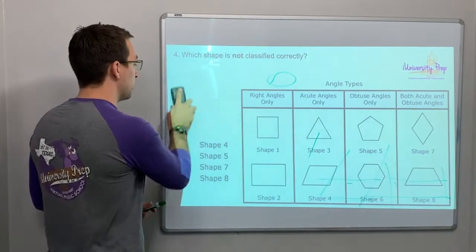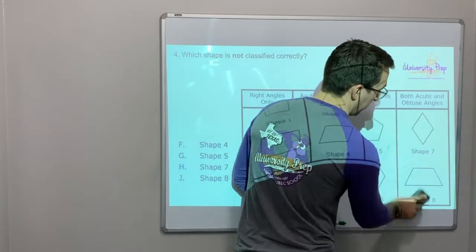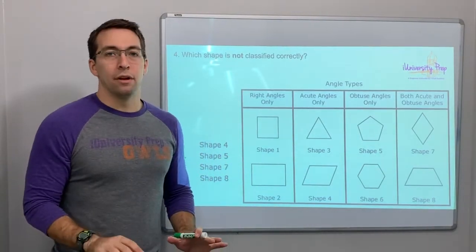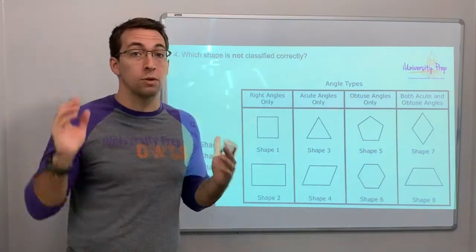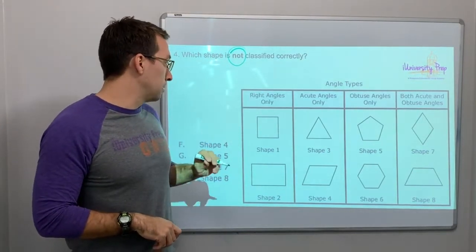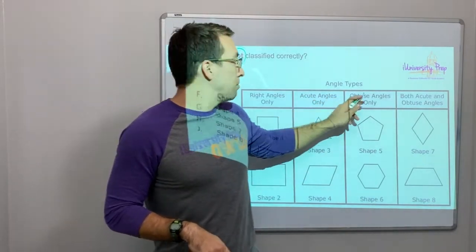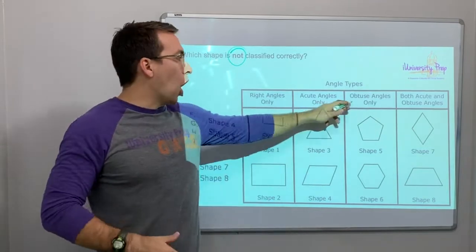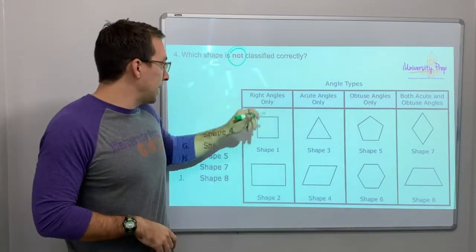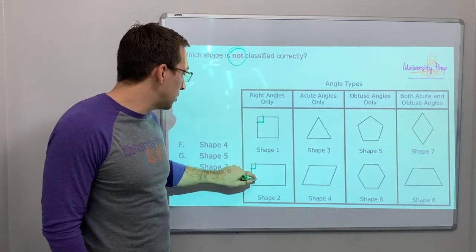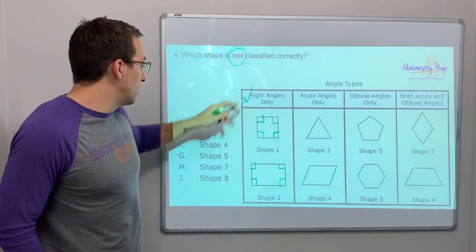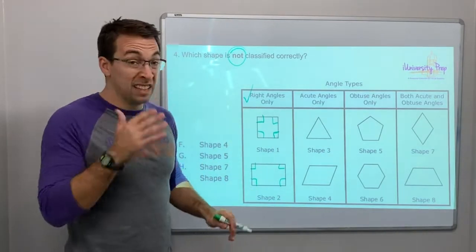With these geometry shape questions, you're going to have a lot of drawings and ink to analyze, so slow down. Which shape is not classified correctly? The categories are: right angles only, acute angles only, obtuse angles only, both acute and obtuse angles. Shape one looks like a square and shape two looks like a rectangle — both right angles only. Those check out.